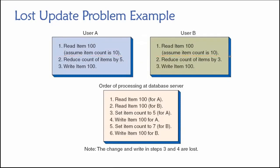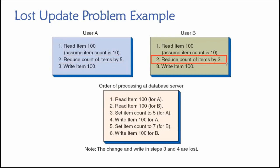Here's where the problem starts. Reading isn't a problem — we tell both of them the current value is 10. But the problem is they want to change that value. User A, salesperson A, wants to reduce the number of items in inventory for item 100 by five — they sold five units. Simultaneously, salesperson B is also selling item 100 and has sold three units, so they want to reduce the inventory by three.